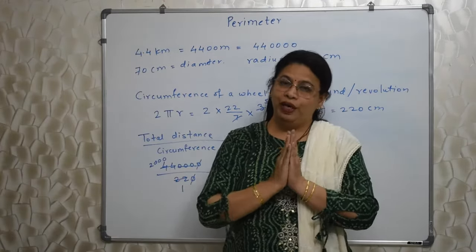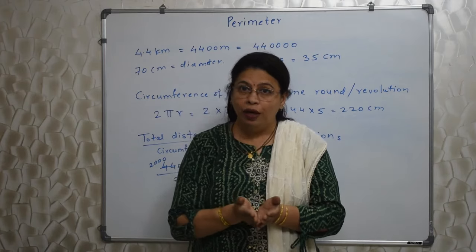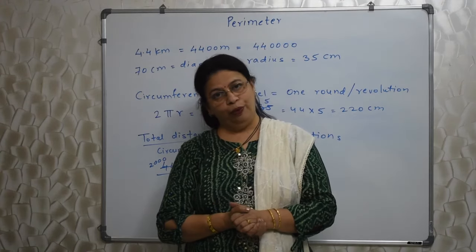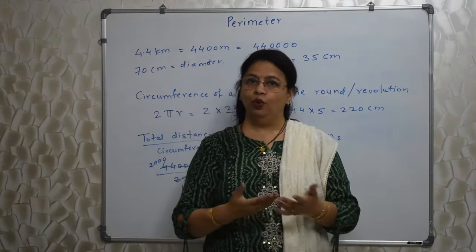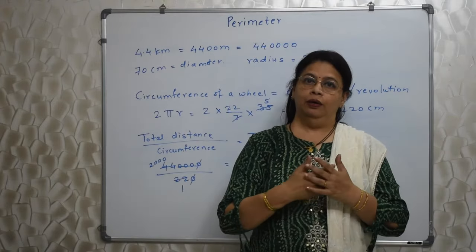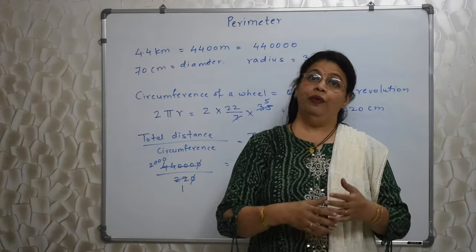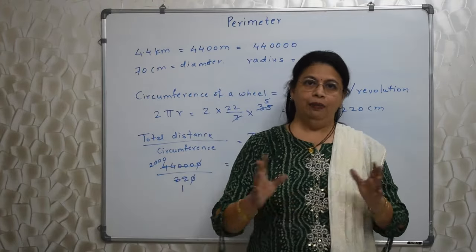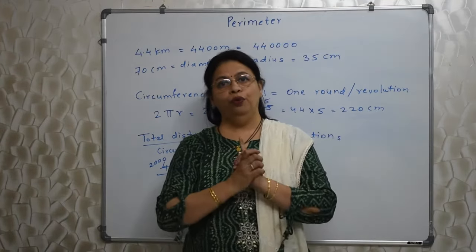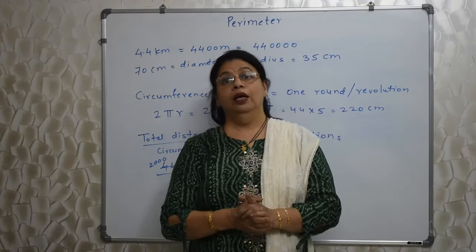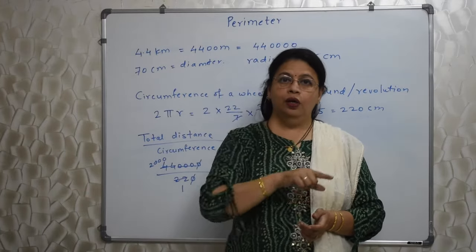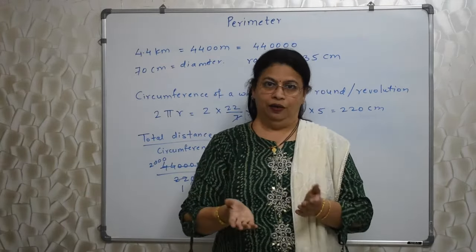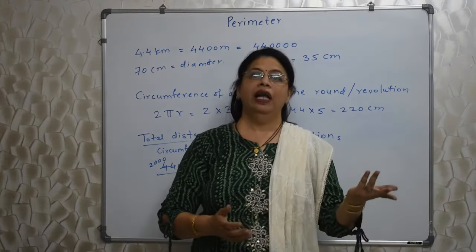Questions are going to be very, very straightforward based on formula. Please see all the formulas of perimeter. We are supposed to know various formulas of various different types of figures — square, rectangle and many others. The circumference of a circle is the same as the perimeter of the circle; it just has a different name.